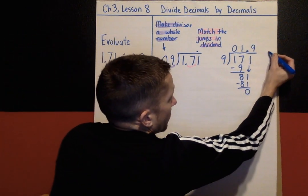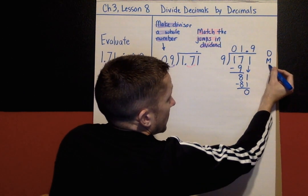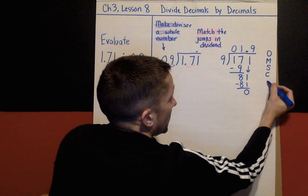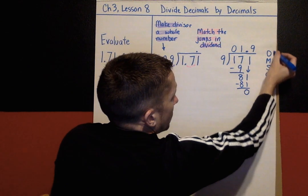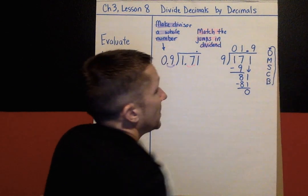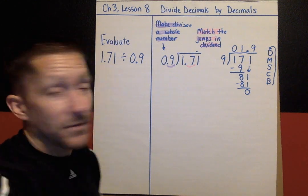And I'm going to write the steps over here for long division. I'm just going to abbreviate: Does McDonald's sell cheeseburgers? And then go make a loop back to the top. That's our steps: divide, multiply, subtract, check, bring down, which we've gone over before.